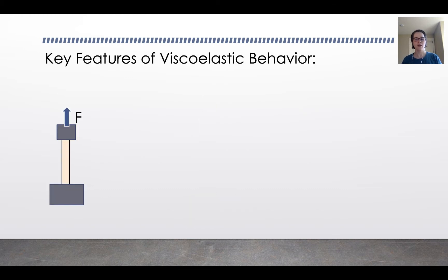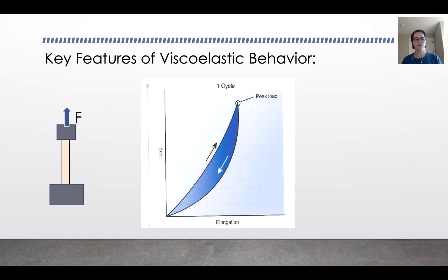When we do that, the first thing you'll notice when you load and unload the tendon is that the up curve is different than the down curve. And this region in the middle corresponds to energy loss. So not all of the energy is returned. You lose some energy in the process. And this is a phenomenon known as hysteresis. Energy loss as you load and unload a material, hysteresis. It's one of the key characteristics of viscoelastic behavior.